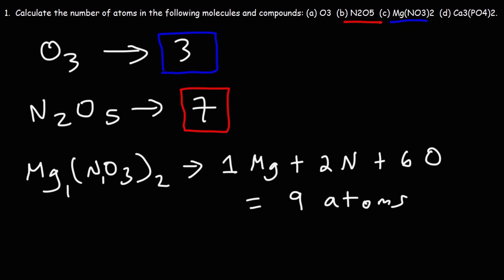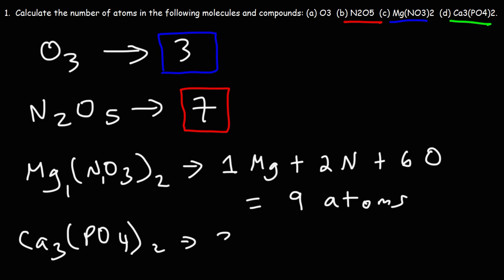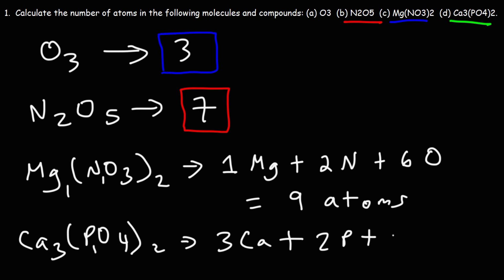Now let's do the same for calcium phosphate. We have 3 calcium ions — we'll treat them as atoms for this example. We have 2 phosphorus atoms, and for oxygen it's 4 times 2, so 8 oxygen atoms. 2 plus 8 is 10, plus 3, giving a total of 13 atoms in this compound.